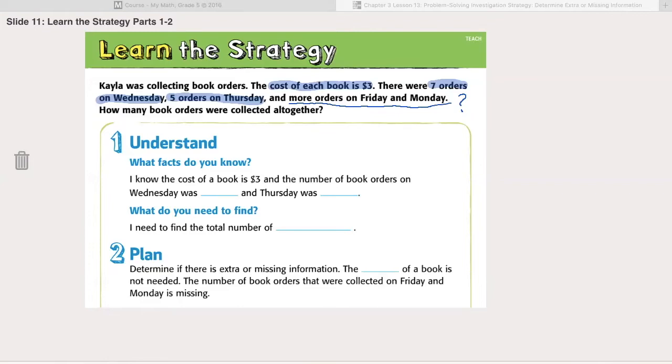So let's look at what facts we know. We know that the cost of a book is $3, and the number of book orders on Wednesday was seven, and Thursday was five. What do you need to find? I need to find the total number of book orders.